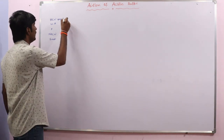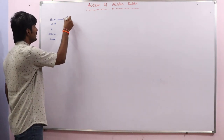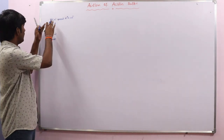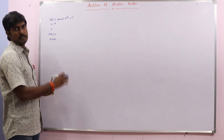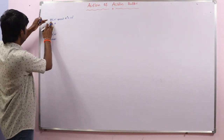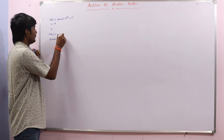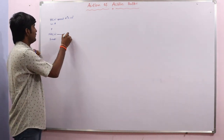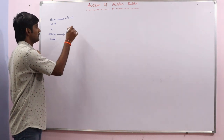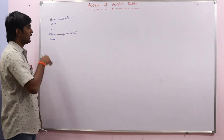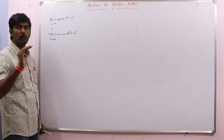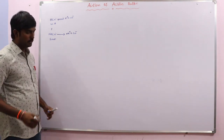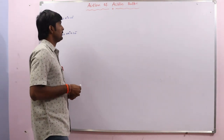HCN is a weak acid, meaning it undergoes incomplete ionization. When it ionizes, we get H⁺ and CN⁻, but only very few molecules ionize; most remain as they are. NaCN, on the other hand, is a strong electrolyte, so it dissociates almost 100% into Na⁺ and CN⁻.